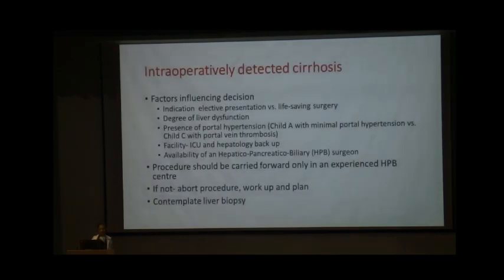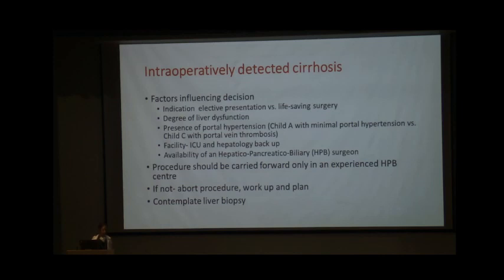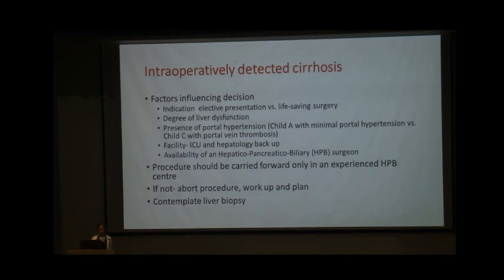When cirrhosis is incidentally discovered intraoperatively during cholecystectomy, several factors influence the decision to proceed: the indication for surgery and whether it can be deferred, the degree of liver dysfunction (ideally Child A if evaluation was adequate), the presence of portal hypertension and collaterals around the gallbladder, availability of energy devices, ICU setup, a hepatologist on call, and an HPB surgeon. If all these are available it may be reasonable to proceed; if not, it is prudent to abort, work up the patient, and plan surgery or refer to an HPB center. A liver biopsy should be contemplated in this setting.